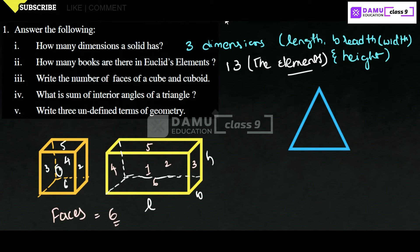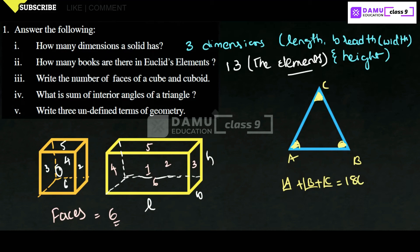Next: what is the sum of interior angles of a triangle? Let's take triangle ABC with angles A, B, and C. The sum of all interior angles — angle A plus angle B plus angle C — will be equal to 180 degrees. The sum of all interior angles of a triangle is always 180 degrees.